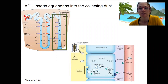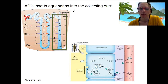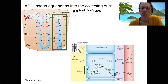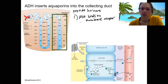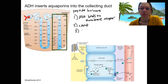Let's zoom into this collecting duct and look at the cells that are regulated by ADH. ADH is a peptide hormone, so instead of entering the cell like angiotensin does, the first step is shown right here. ADH is going to bind to a membrane receptor in the cells of the collecting duct. This is going to activate cAMP, which is a second messenger. The second messenger causes activation of storage vesicles and then insertion of aquaporin into the membrane.